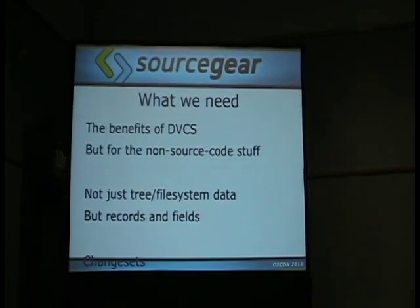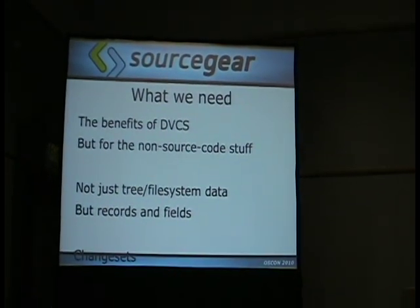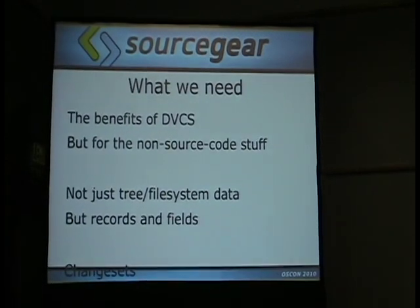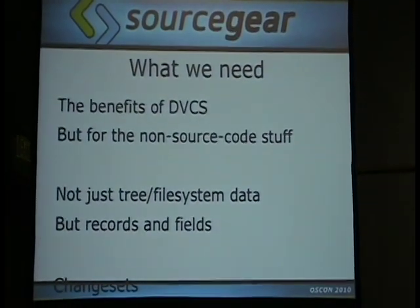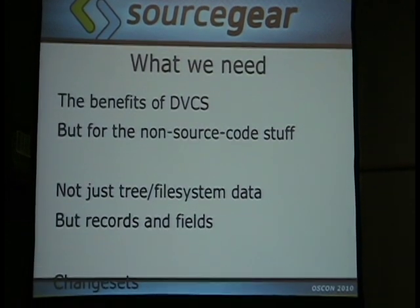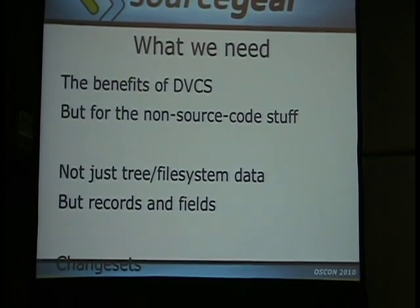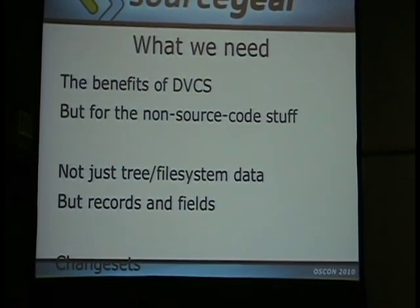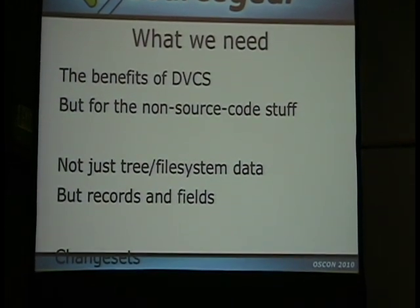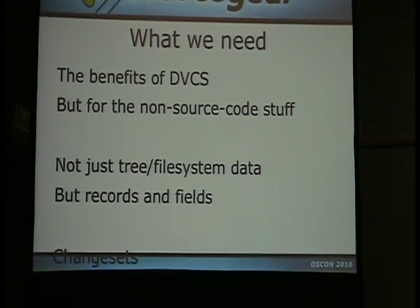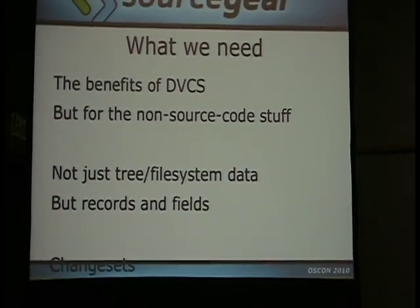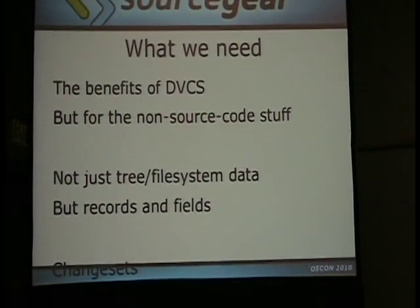What we need is the benefits of the DVCS but applied to all this other stuff. We want to decentralize more so that the entire development team suite can work the way DVCSs do. We don't want just tree and file system data to be decentralized — we want to decentralize record data. We want changesets that work for databases, and we want to push and pull those changesets the same way we do now for source code.